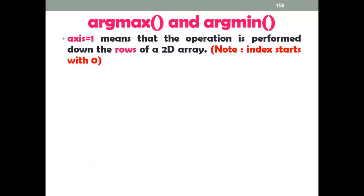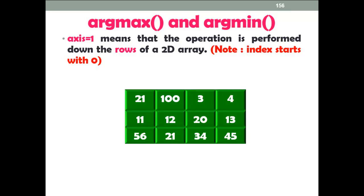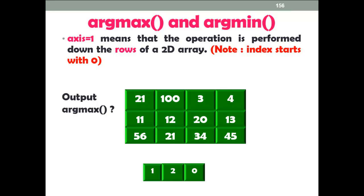Next, axis equal to 1, which means the operation is performed across the rows of a 2D array. Please note that the index starts with 0. Using the same 2D array, the output of argmax with axis equal to 1 gives 3 values, because there are 3 rows indexed 0, 1, and 2. The first output is 1, because the maximum value is available at index 1 of row 0.